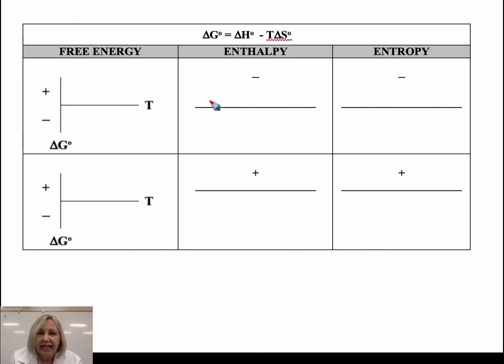So here we have a negative enthalpy. That's favorable. That's exothermic. And that's considered favorable. So we don't have an energy barrier here. But our entropy change is negative. So that's our barrier. That's unfavorable.